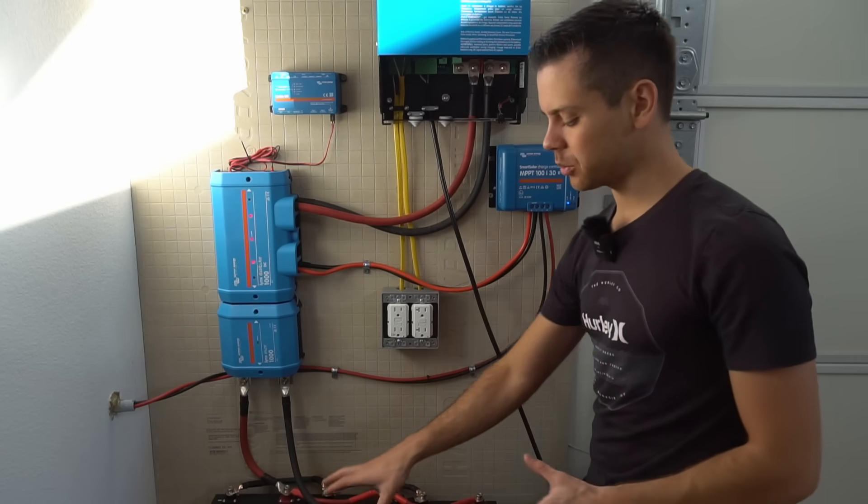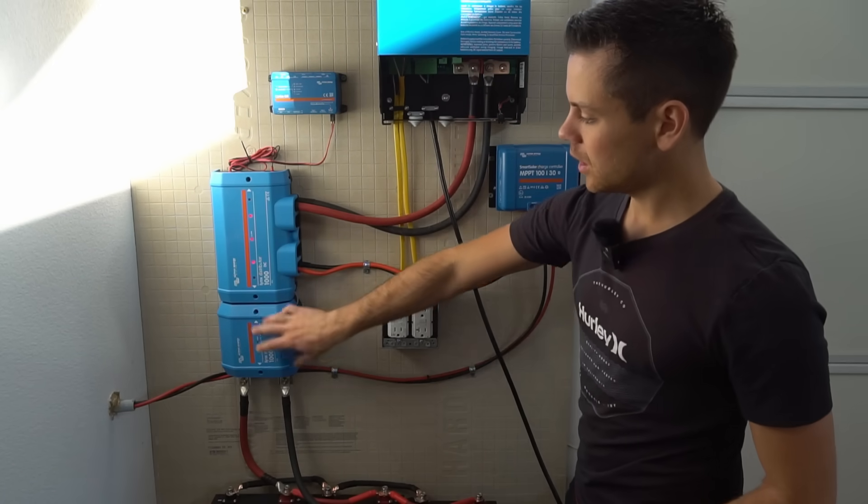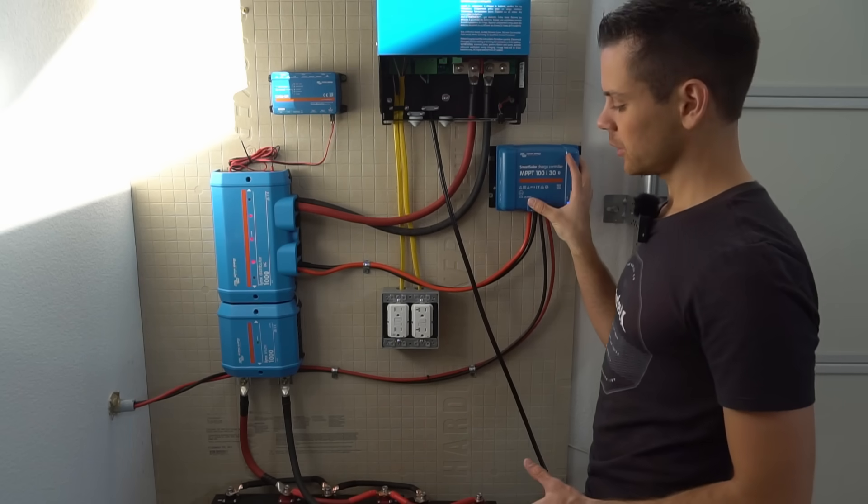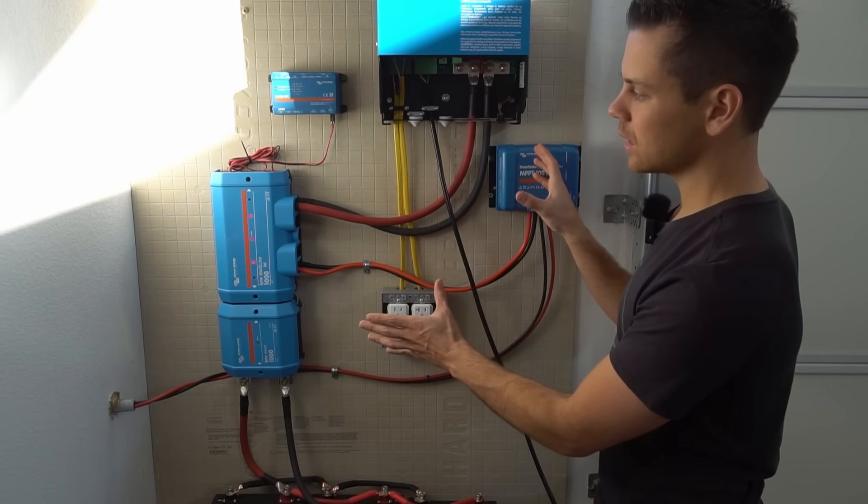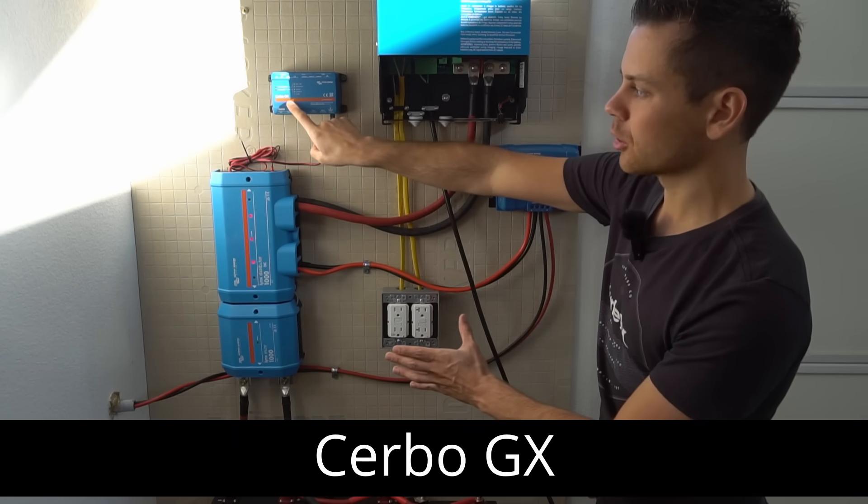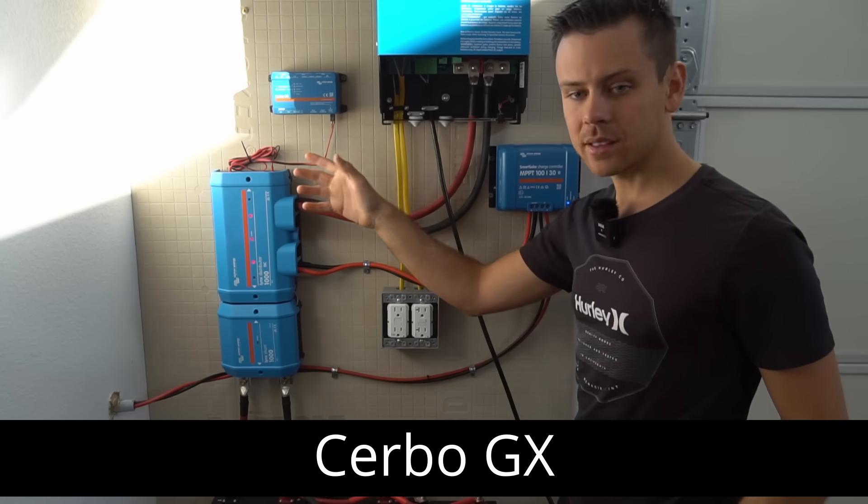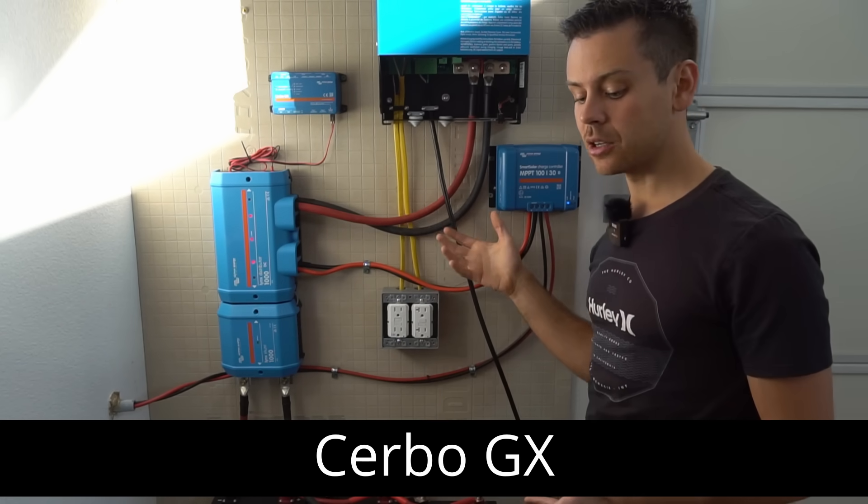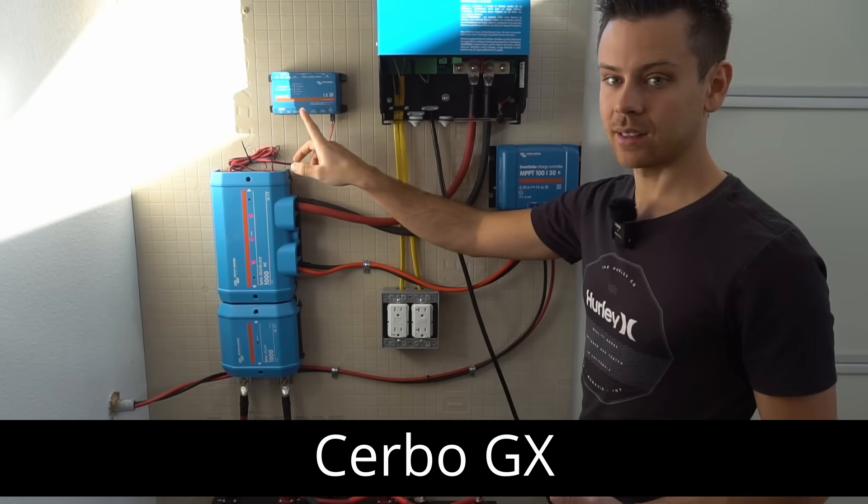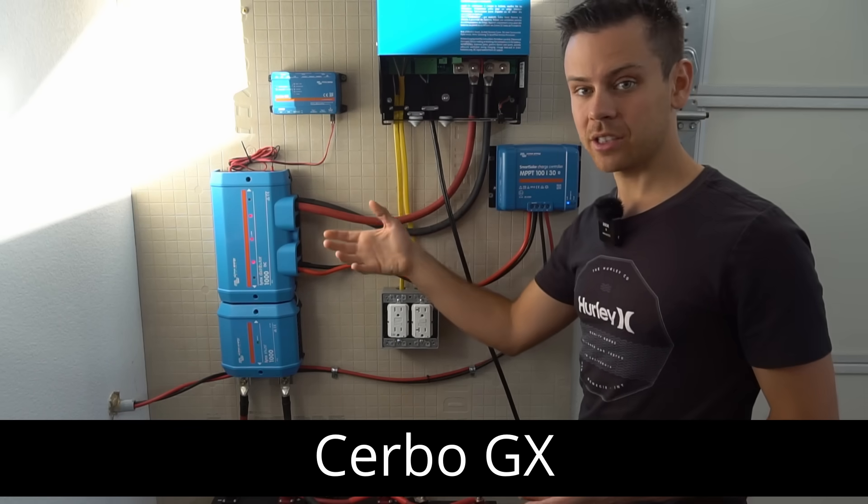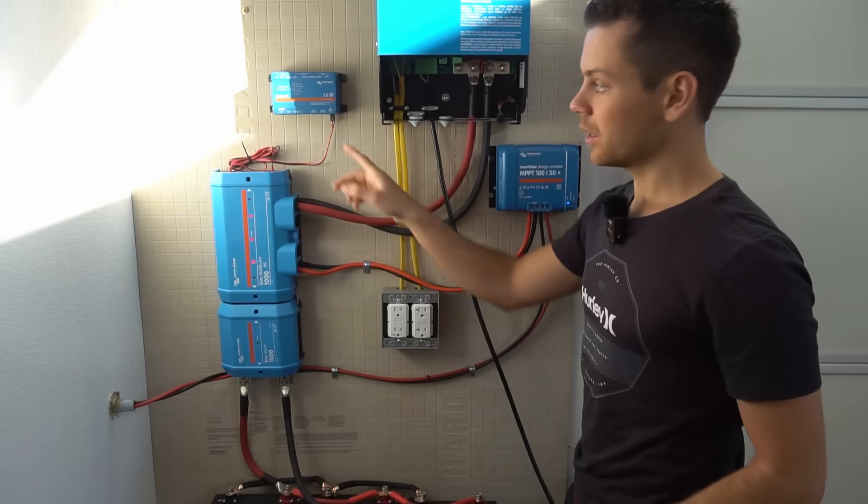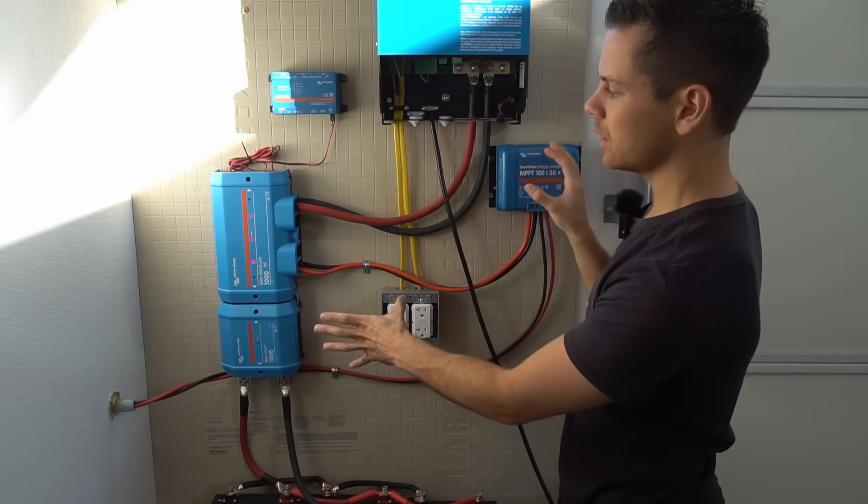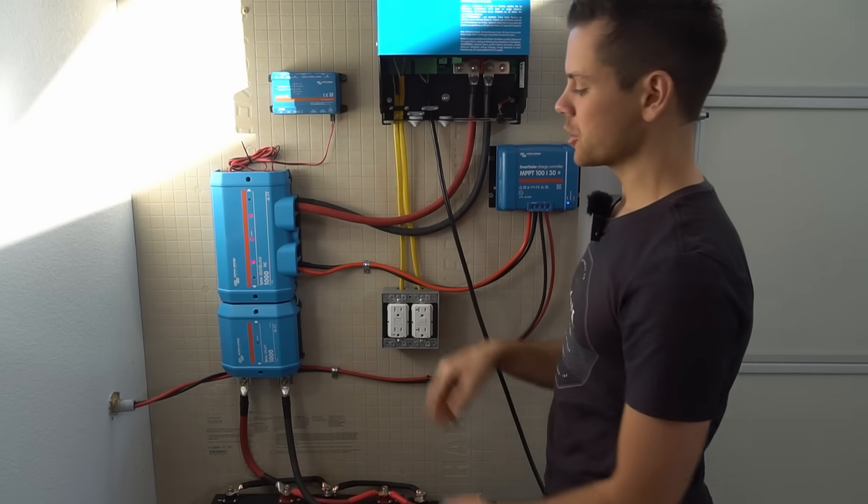So let's summarize the main components. We have a battery, a shunt, a distributor, an inverter, and the solar charge controller. Now all of these will communicate together through what's called the Cerbo GX. And this is the brain of the system. This allows all of these components to communicate together and to connect to the internet, to have a display screen, and so much more. This thing is actually quite impressive. But in order to do that we need to connect these components to the Cerbo GX.